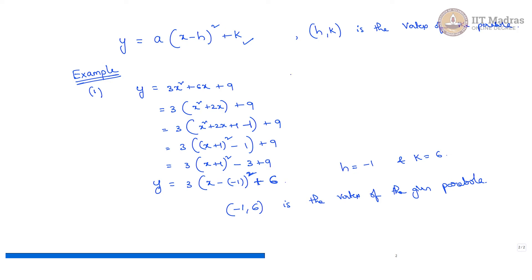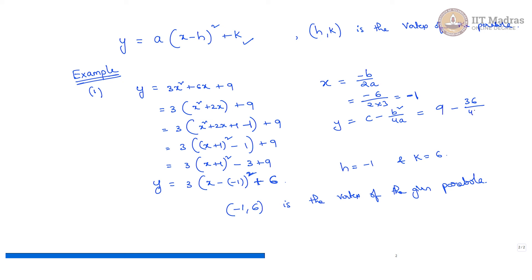Let us cross-verify this. We know that from the standard form, the x-coordinate of the vertex is x is equal to minus b by 2a. Here b is 6 and a is 3, so substituting gives minus 6 by 2 times 3, which gives x is equal to minus 1. The y-coordinate is c minus b squared by 4a. Here c is 9, b is 6, so b squared is 36 divided by 4 times 3, which gives 9 minus 3, giving us 6. So the vertex point is minus 1 comma 6, confirming the same result through the standard form.